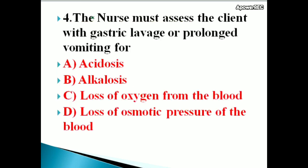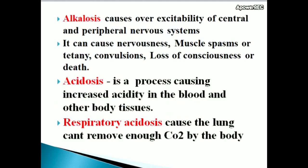Next question: The nurse must assess the client with gastric lavage or prolonged vomiting for — options: acidosis, alkalosis, loss of oxygen from the blood, loss of osmotic pressure of the blood. The correct answer is alkalosis. Alkalosis causes overexcitability of the central and peripheral nervous system.